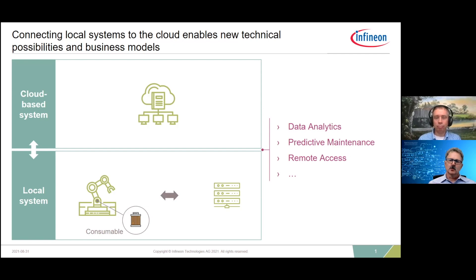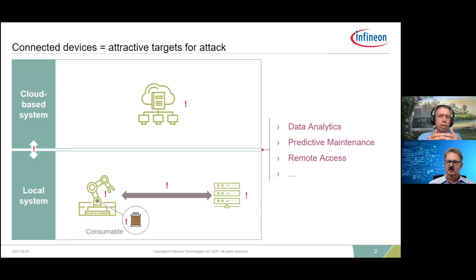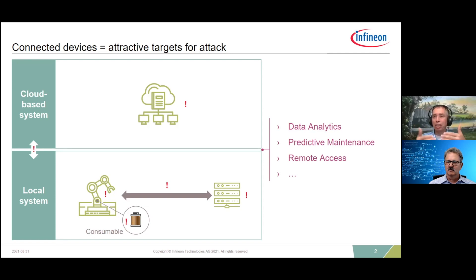If you can connect to something, something else can connect to you. The attacks can come at any point in the system — not just on the device, but on the network, on the cloud, and even on the consumables. It's not that we don't want to connect them — that's where the goodness of IoT comes from. It's that we want to connect them carefully, in a protected manner — we want to connect them securely.